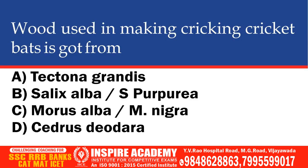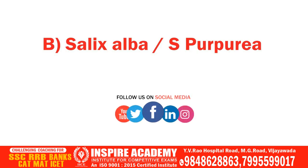Wood used in making cricket bats is got from which plant? Options: Tectona grandis, Salix alba, Morus alba, Cedrus deodara. The correct option is Salix alba.